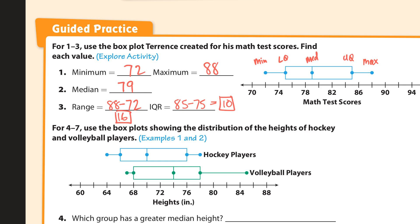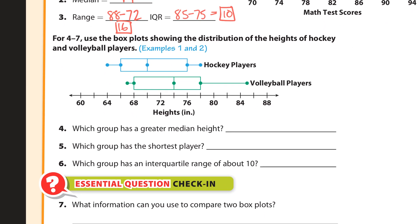Let's use the box plots to show the distribution of the hockey and volleyball players. Which group has a greater median? We look at this number right here — there is the median for the hockey players and this is for the volleyball players — so it's going to be volleyball. Which group has the shortest player? That would be the minimum right there, and comparing these two, it would be the hockey players.